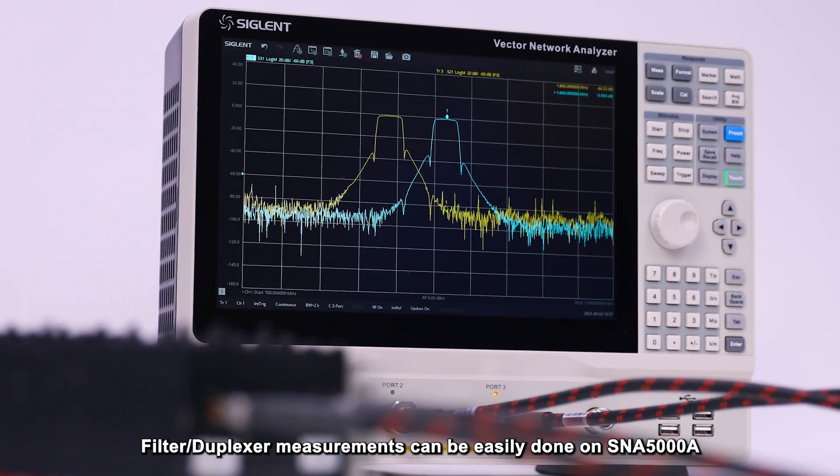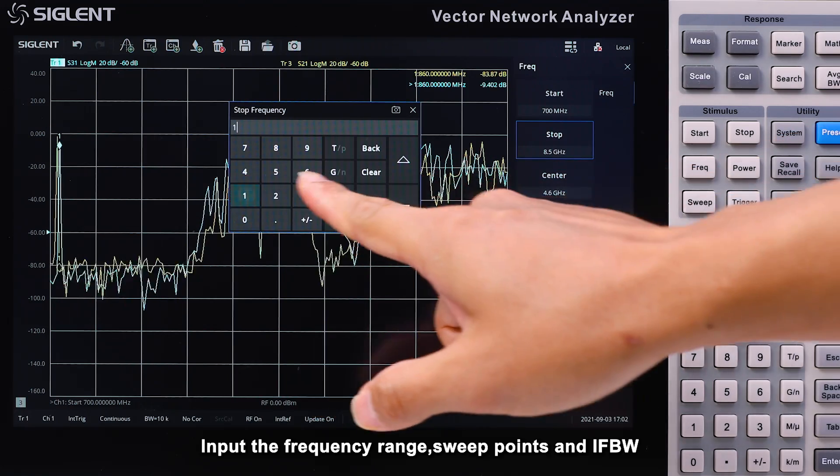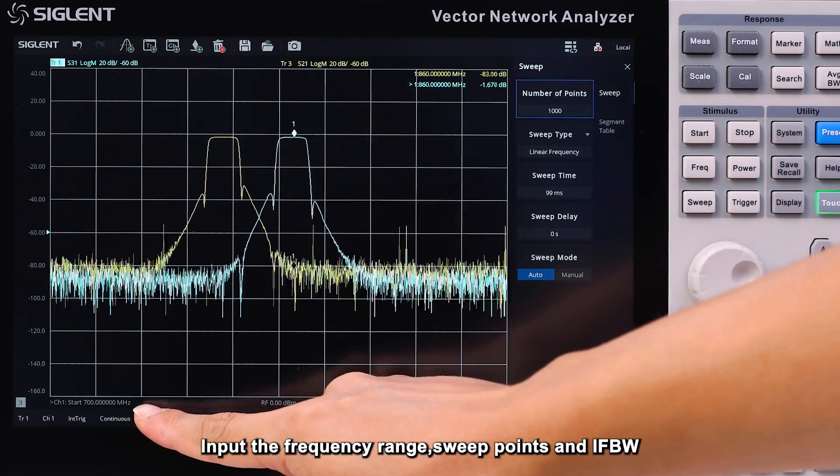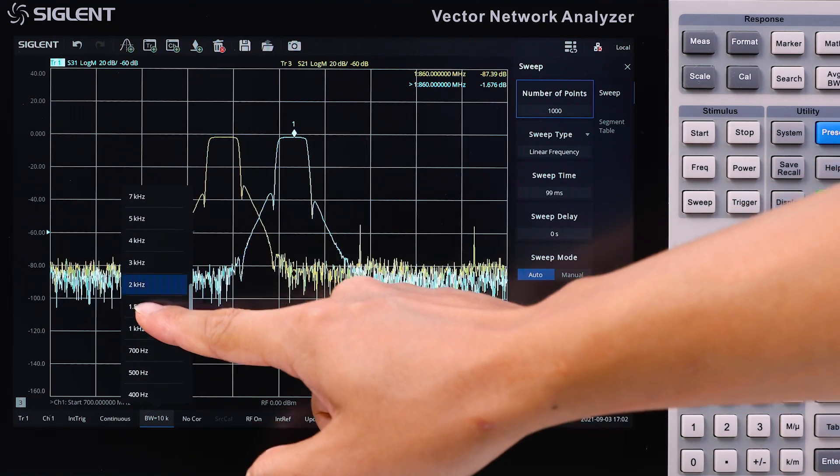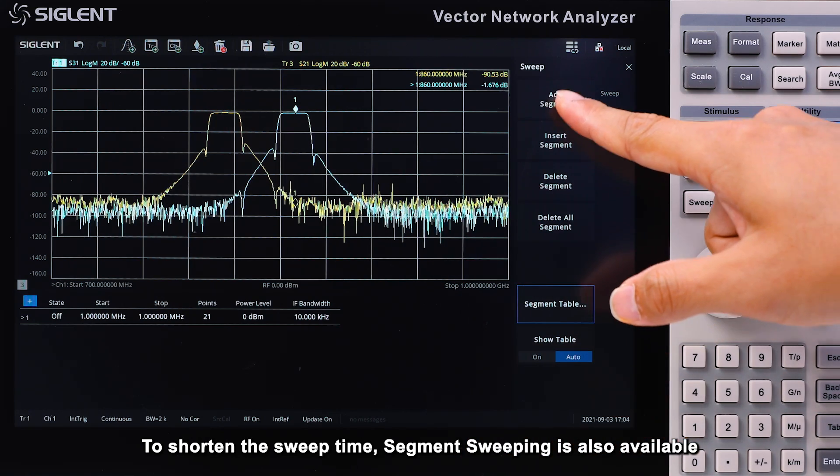Filter and duplexer measurements can be easily performed on the SNA 5000A. Input the frequency range, sweep points, and IFBW. To shorten the sweep time, segment sweeping is also available.